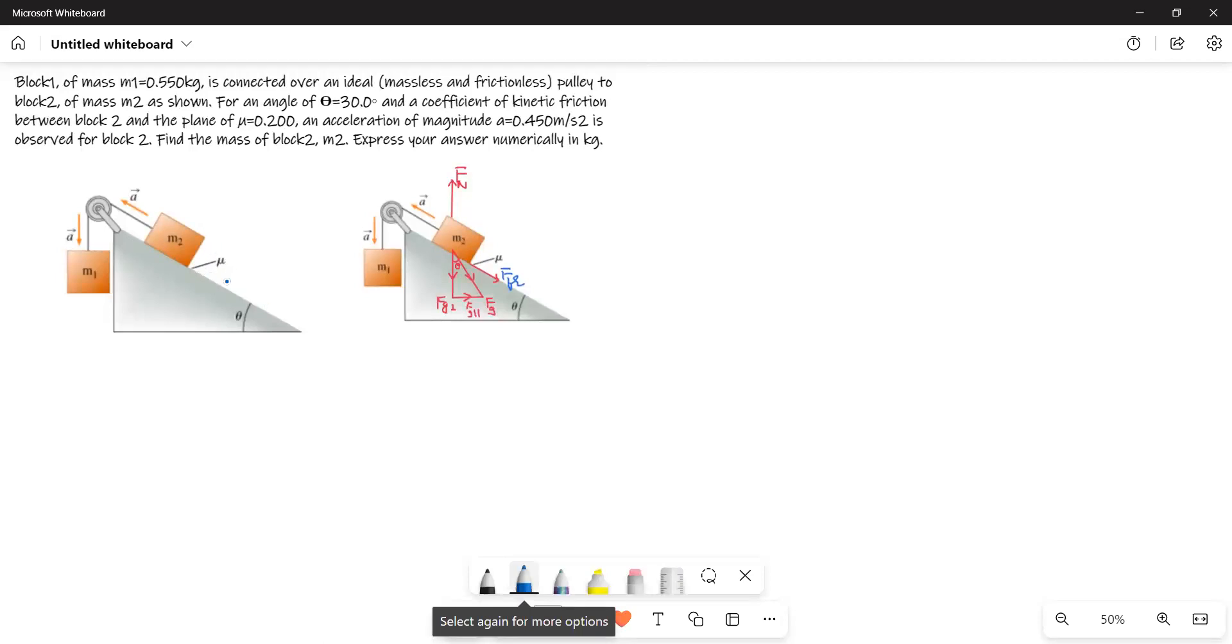The coefficient of friction is given to us. Mass M1 is going down and M2 is going up, and the pulley is massless and frictionless. Angle is also given to us. That angle is 30 degrees.